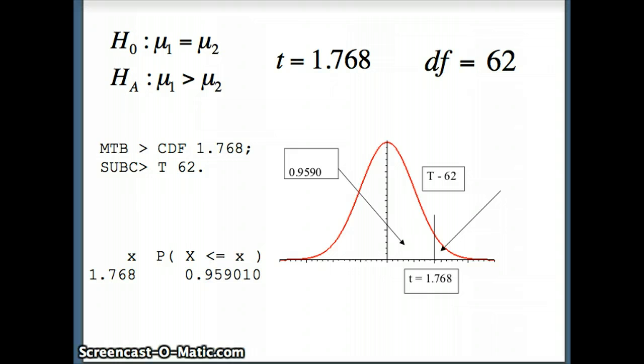So if that's 0.959, almost 96%, how much is to the right? Just 0.041. So our p-value will be the area to the right. Our p-value will be 0.041.